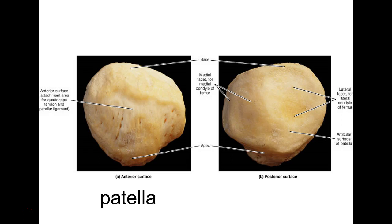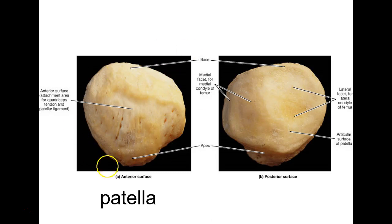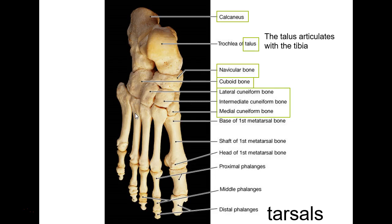The kneecap — the patella — is a sesamoid bone. You probably won't need to tell left from right on a laminate. If you see something that looks like a rock, that's basically your patella. It's one of the best examples of a sesamoid bone among the six bone shapes.